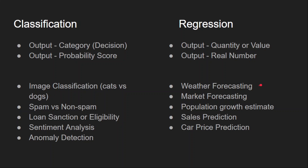Regression examples include weather forecasting — for instance, what will the temperature be tomorrow, giving an output like 30 degrees. Market forecasting asks what the share value of a particular stock will be tomorrow, also a real number. And population estimation, such as what will the population of India be by 2030, is another example — again, a number.